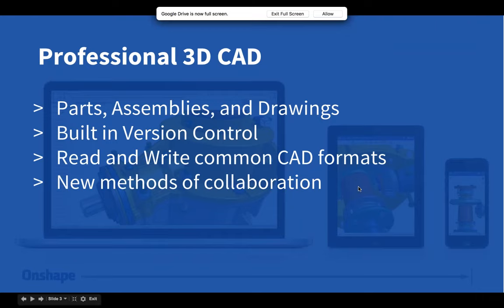We do consider ourselves professional 3D CAD — really parts, assemblies, and drawings. What's unique about Onshape is first, you'll see us evolve very quickly, with new functionality being added roughly every three weeks. In addition, we have built-in version control, so unlike traditional CAD systems that need a separate data management solution, Onshape has version control built into its core. We can also import and export common CAD formats: Step, IGES, Parasolid, SolidWorks, Catia, Inventor, and a number of others.